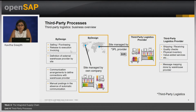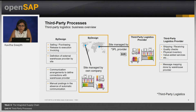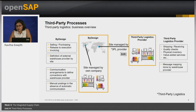The third party logistics provider is also modeled as a business partner with the role of warehouse provider in the system. A communication arrangement must be set up which will help in the exchange of messages electronically between the Business by Design system and the 3PL provider system. These are B2B messages, that is business-to-business interfaces following the UN/EDIFACT standard.